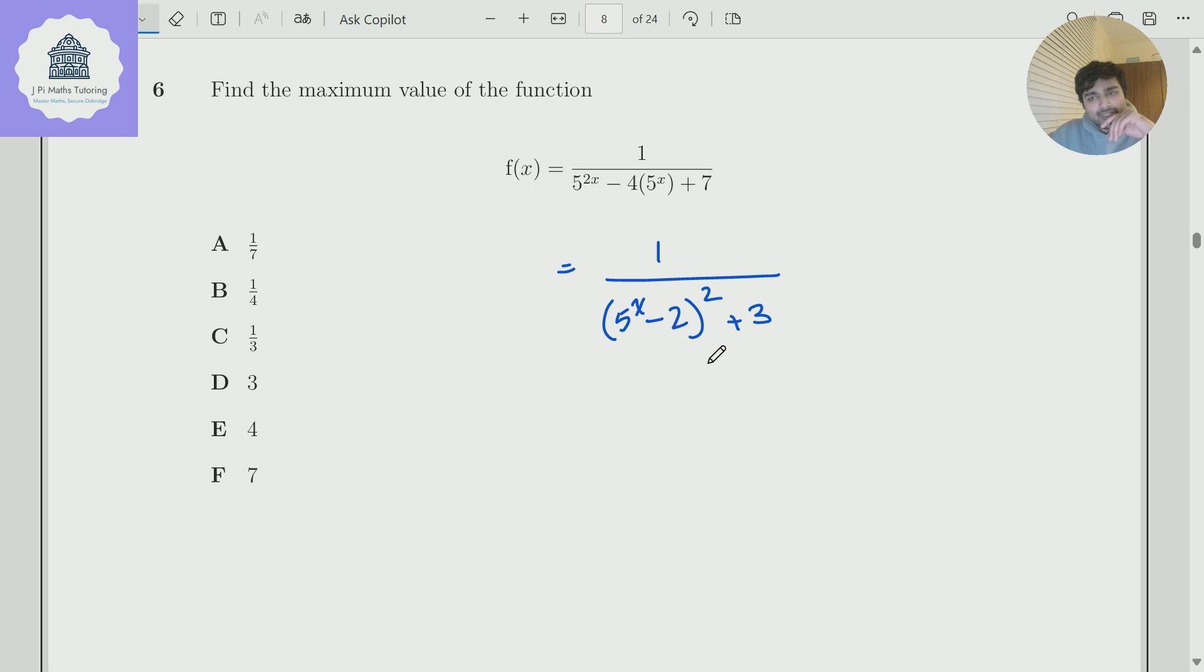What's the smallest the denominator can be? Well, I've got something squared plus 3. Now this something squared has to be at least 0. So the minimum that the denominator can be is 3.